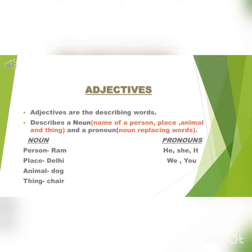So what are adjectives? Adjectives are the words which actually describes a noun. They are also known as describing words. Noun is a name of a person, place, animal or a thing. So all the words which describes a noun are known as adjectives or describing words.